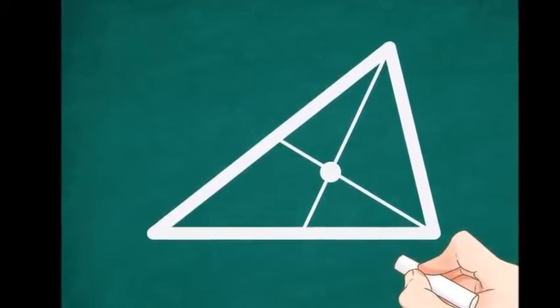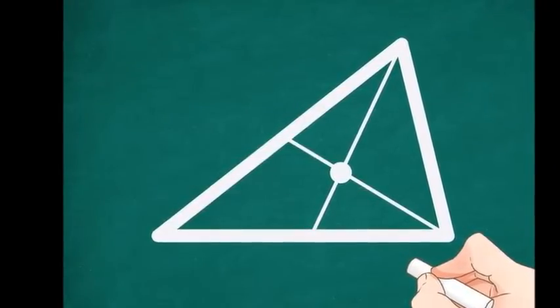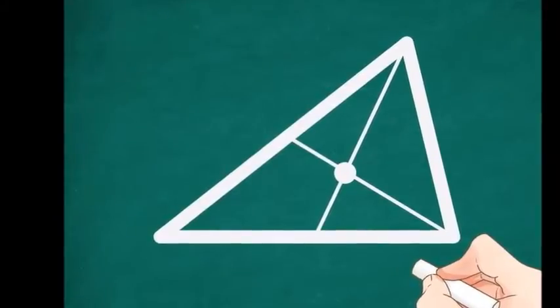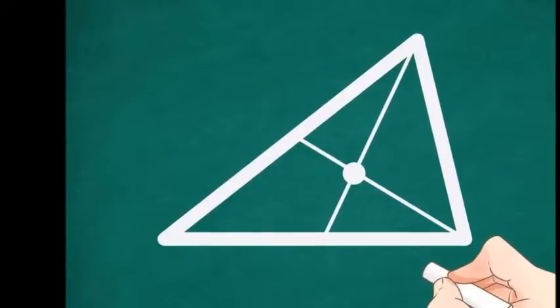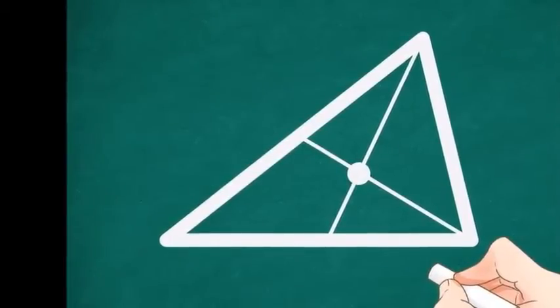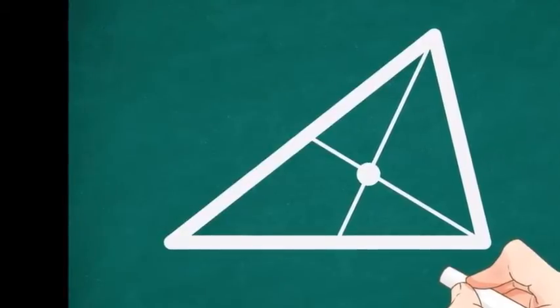The seesaw: 30 pounds by 8 feet equals 240 feet by pound. Child 1 equals 40 pounds by 1 foot equals 40 feet by pound. Child 2 equals 60 pounds by 15 feet equals 900 feet by pound.